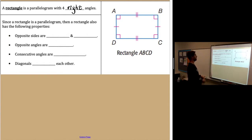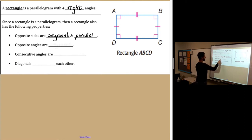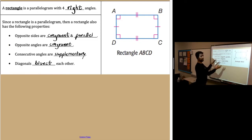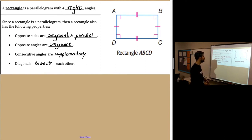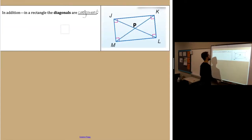Hopefully we remember there are five properties of parallelograms. Those five properties are: opposite sides are congruent, opposite sides are parallel, opposite angles are congruent, consecutive angles are supplementary, and the diagonals bisect each other. A rectangle has all five of those, but takes it one step further and adds two new properties on top. One of those properties is that all angles are right, but we also know that the diagonals are congruent.